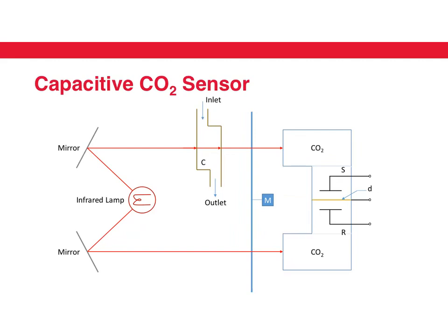One very interesting example of a differential capacitor is this capacitive carbon dioxide sensor. This sensor is basically based on the movement of this diaphragm here.